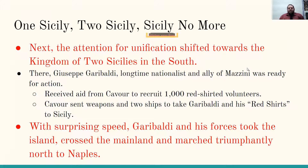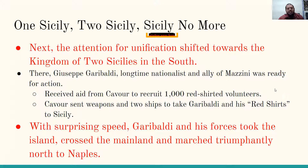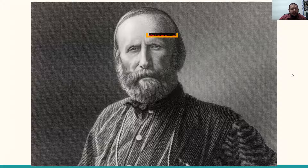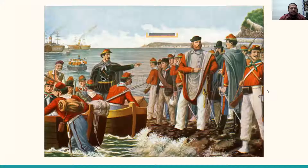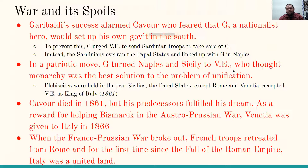Next, attention for Italian unification shifted towards the Kingdom of the Two Sicilies in the south. A man named Giuseppe Garibaldi, a longtime nationalist and ally of Mazzini, was ready for action. He received aid from Cavour to recruit 1,000 red-shirted volunteers. Cavour sent weapons and two ships to take Garibaldi and his red-shirts to Sicily. With surprising speed, Garibaldi and his forces took the island, crossed the mainland, and marched triumphantly north towards Naples.